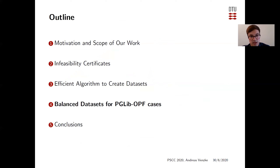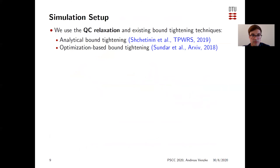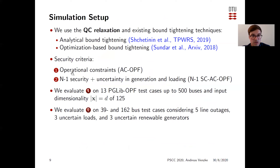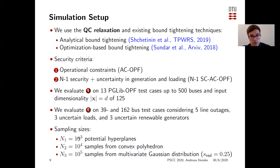We created balanced data sets for PGLib-OPF test cases. We use the QC relaxation as it represents a good trade-off between computational tractability and tightness. We apply two existing bound tightening techniques: an analytical and an optimization-based one. Two security criteria are evaluated: operational constraints, and N-1 security with uncertainty in generation and loading. For operational constraints, we evaluate 13 PGLib-OPF test cases up to 500 buses with input dimensionality up to 125. For N-1 security, we use 39 and 162-bus test cases with five line outages, three uncertain loads, and three uncertain renewable generators. Sampling sizes increase progressively: 1,000, 10,000, and 100,000 samples across the three stages.